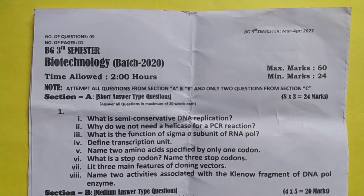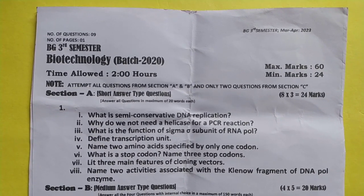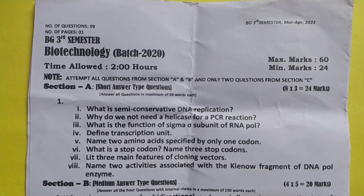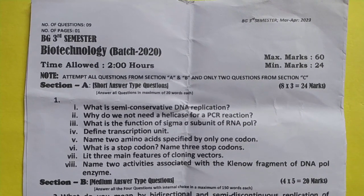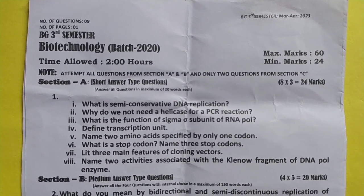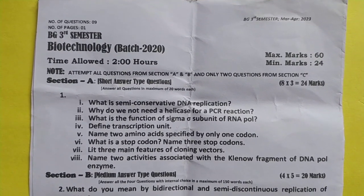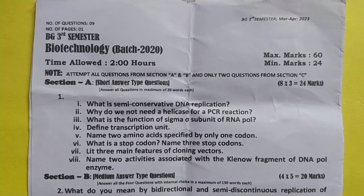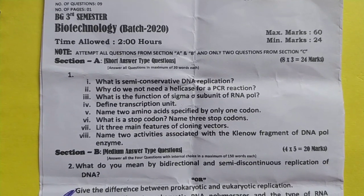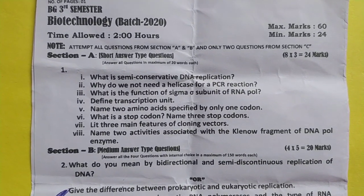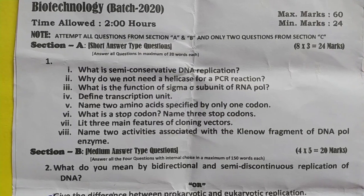BG third semester biotechnology, Section A. Question one: What is semi-conservative DNA replication? Why do we not need a helicase for a PCR reaction? What is the function of the sigma subunit of RNA polymerase? Define transcription unit. Name two amino acids specified by only one codon.